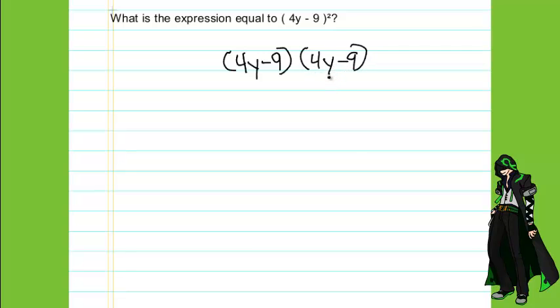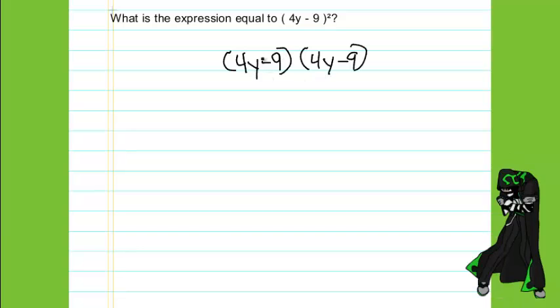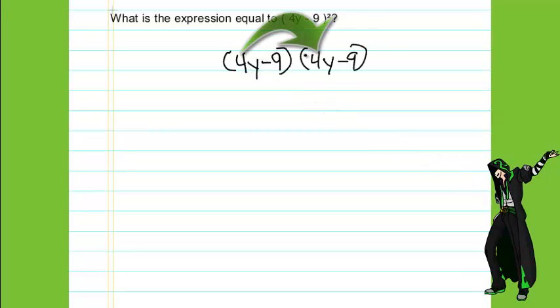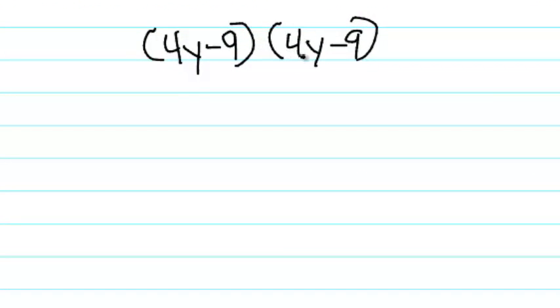Now that that is broken apart, we can do a multiplication method where we multiply two expressions together. To do this, we take the first factor, 4y, and multiply it by both 4y and the negative 9 on the other side. So 4y multiplied by 4y would make 16y squared because 4 times 4 is 16.